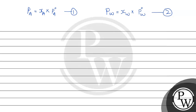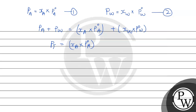Now we will add the first and second equations. Adding them: PA + P_water = xA × P0A + xW × P0W. The total vapor pressure of the solution is equal to 145 mmHg. We are also given that P0W, the vapor pressure of pure water, is equal to 155 mmHg.